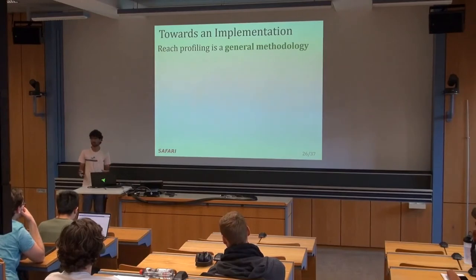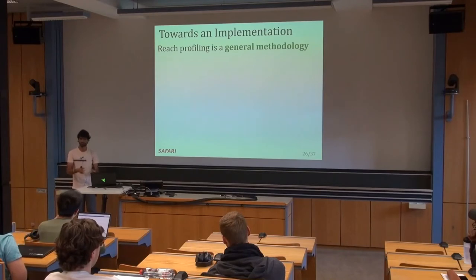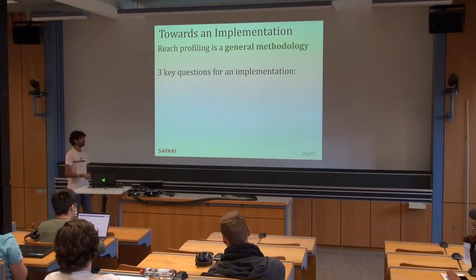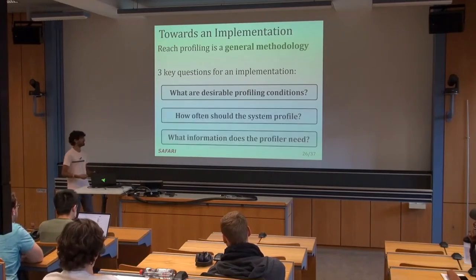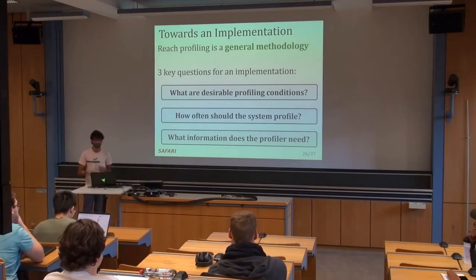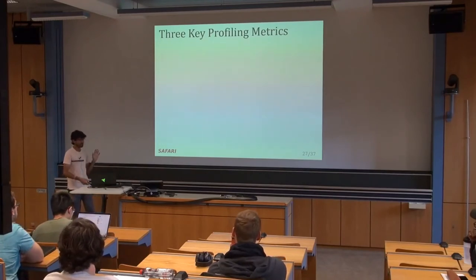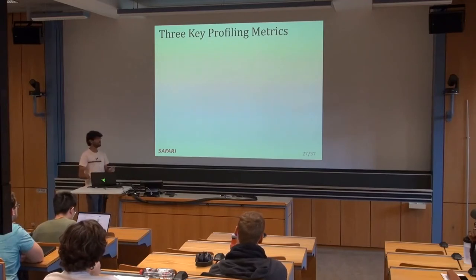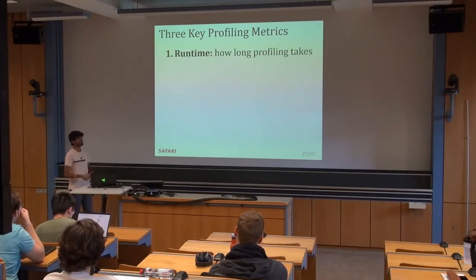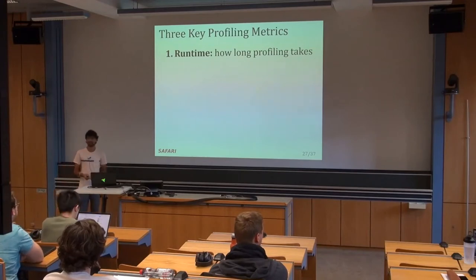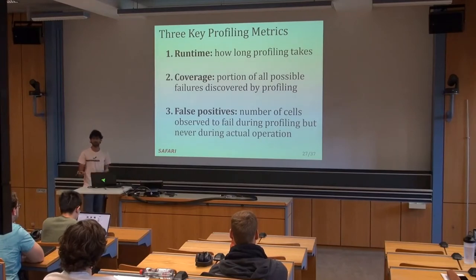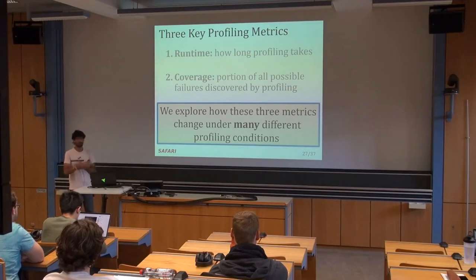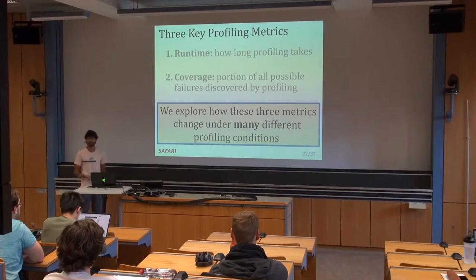To turn Reach Profiling into an actual microarchitectural implementation, we identified three key questions. First, what are the desirable profiling conditions we want to profile at? Second, how often should the system be running this profiling operation? And third, what information do we actually need to give to the profiler to enable this whole process? We identified three key profiling metrics: runtime, which is how long profiling actually takes; coverage, which is the proportion of all possible failures that can be discovered; and the false positive rate, which represents cells identified as failing at profiling conditions but not at operating conditions.